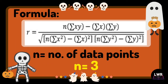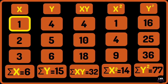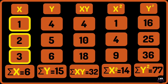And the number of data points denoted by n is equivalent to 3. Let us see why n is equal to 3. Let us count the data points in the first column: we have 1, 2, and 3.